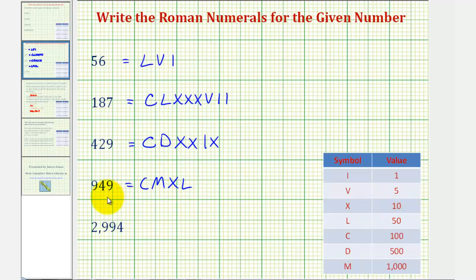And then for 9, again, we'll use an i before an x, or a 1 before a 10. So here we have 900, here we have 40, and here we have 9.